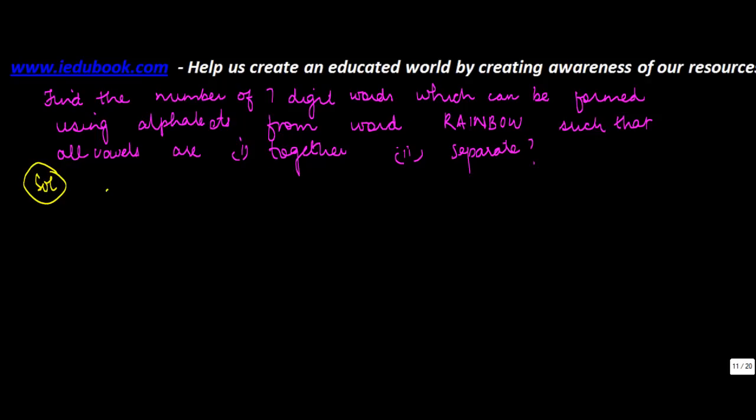First, let's find out n. The word RAINBOW has seven letters: R, A, I, N, B, O, W - one, two, three, four, five, six, seven. How many vowels are there? A, I, O - so there are three vowels.